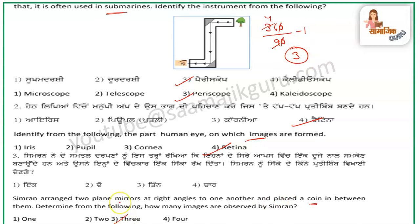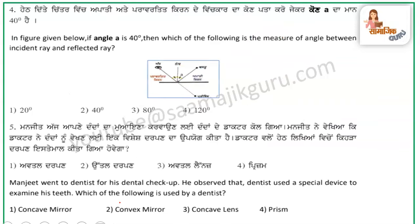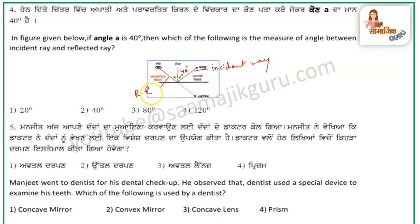The next question is: in the figure given below, if angle A is 40 degrees, then which of the following is the measurement of the angle between the incident ray and the reflected ray? So if angle A is 40 degrees, then the reflected angle is also 40 degrees. So the total is 80 degrees, because the angles are equal.